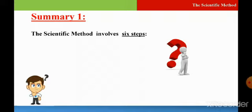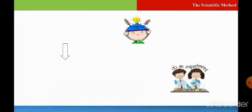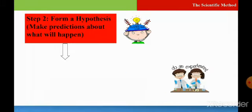Step number one: Ask a question. State the problem as a question. You ask yourself why this happens. Step number two: Form a hypothesis. Make predictions about what will happen. You will predict, you will guess in this step.